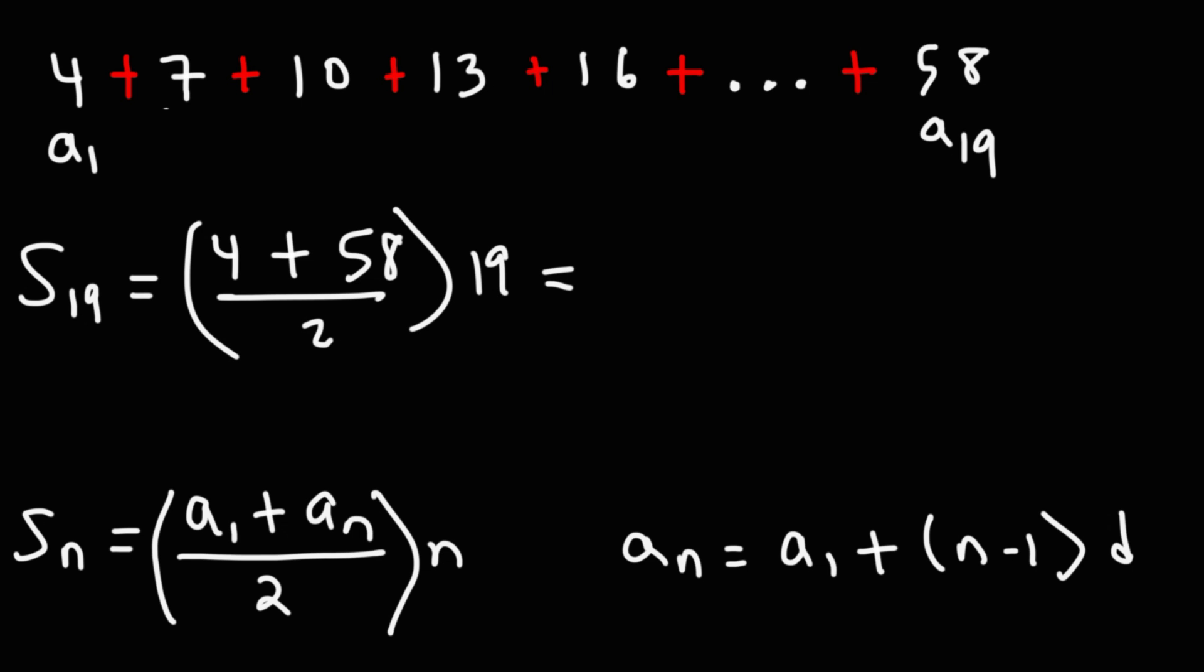4 plus 58 is 62. 62 divided by 2 is 31. So the average of these two numbers is 31. So we take the average, multiply it by the number of terms, and that's going to give us the sum of the arithmetic series. And that's going to be 589.